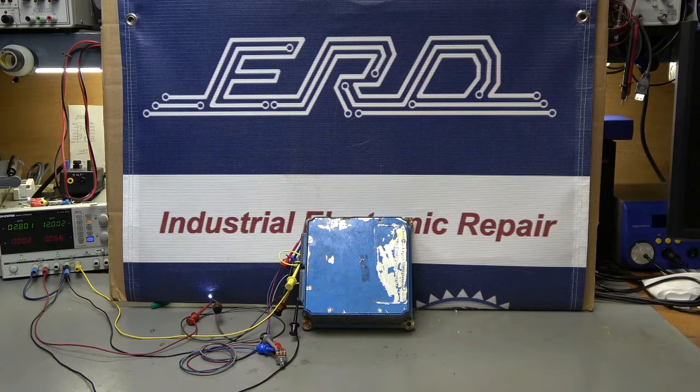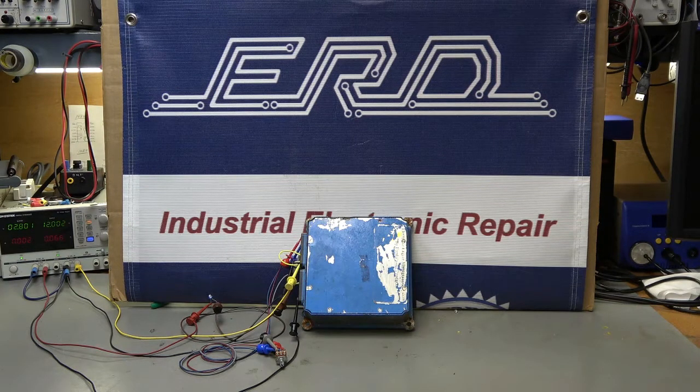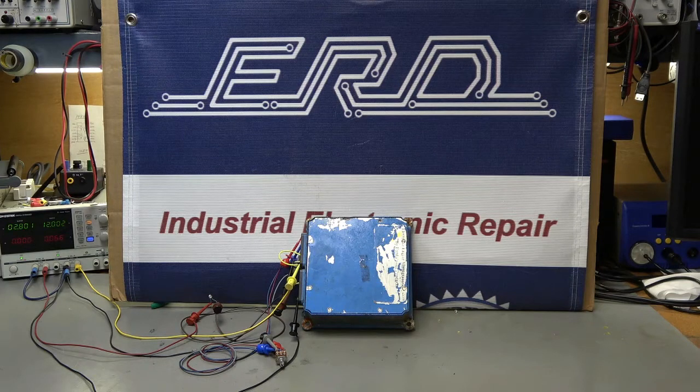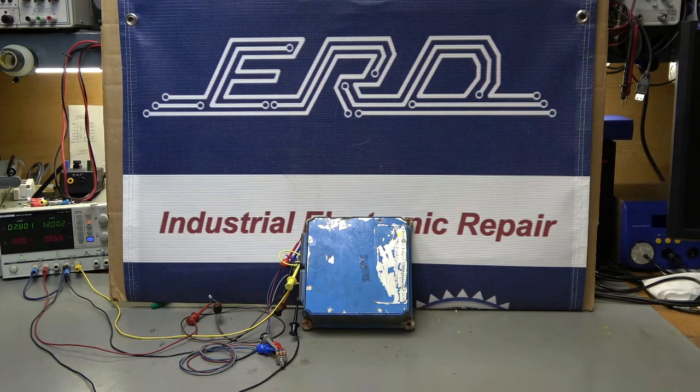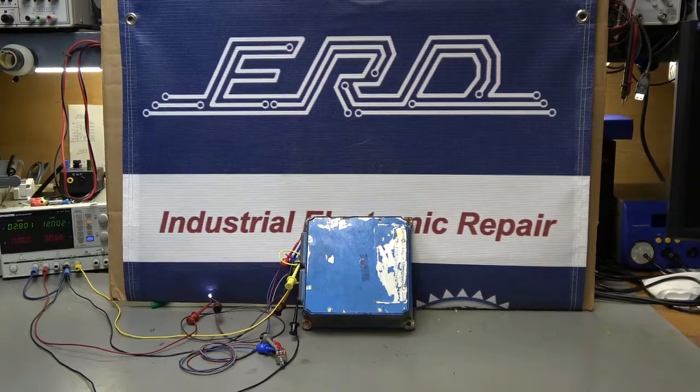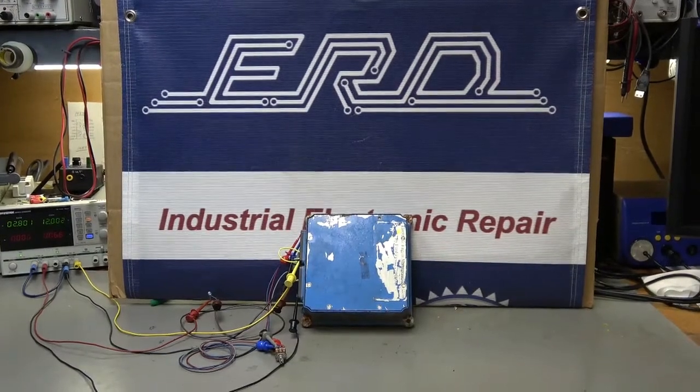Welcome to our channel. ERD is an industrial electronic repair company that provides an industry-leading three-year warranty. We don't just repair your unit, we refurbish it. The Ford F8JL is an engine control module for a Ford ESG 642 industrial 4.2 liter six-cylinder engine.